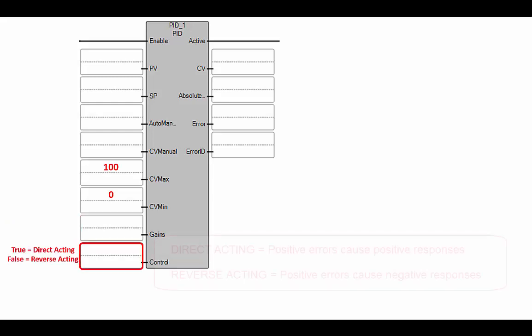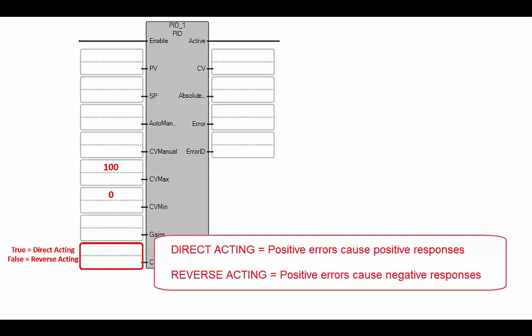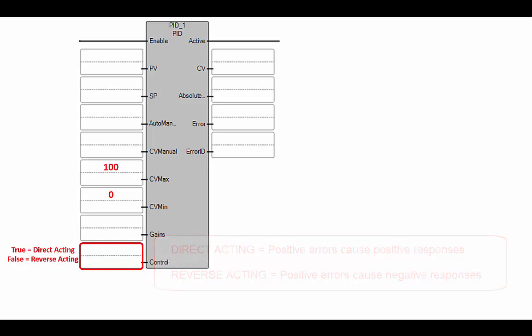This control input, if you remember from the last video, is where we indicate whether this PID is a direct acting or reverse acting controller. A reverse acting controller is one where a positive error — meaning our current tank value is higher than our set point — results in a reduced control variable, meaning we close off the fill valve so the tank level can come back down. That is a reverse acting controller, so we'd set this to false in our case.